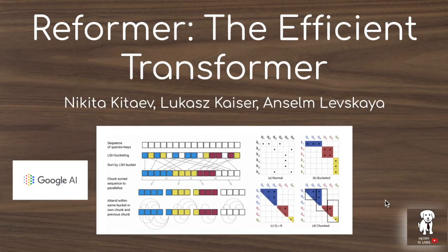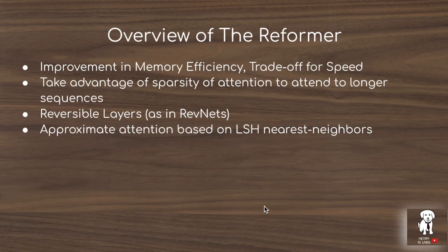The Reformer Efficient Transformer model from Google AI presents techniques to dramatically increase the attention span in transformers — the length of the sequence the transformer attends on — and reduce memory costs, particularly those associated with attending over long sequences and storing intermediate activations through multiple layers.